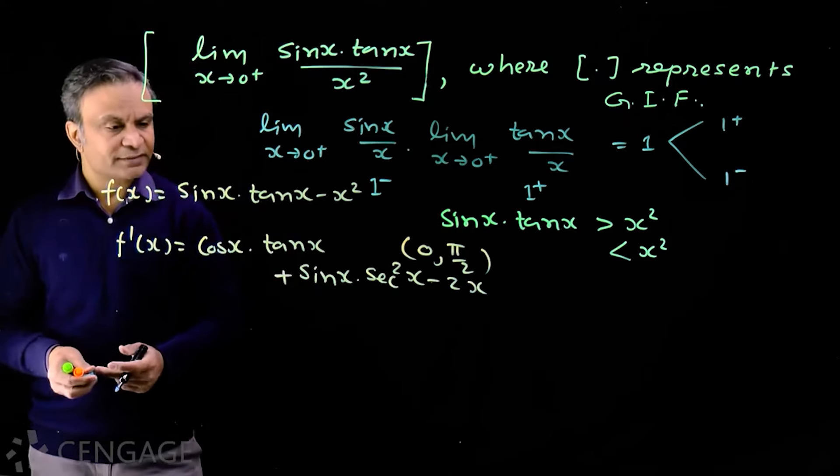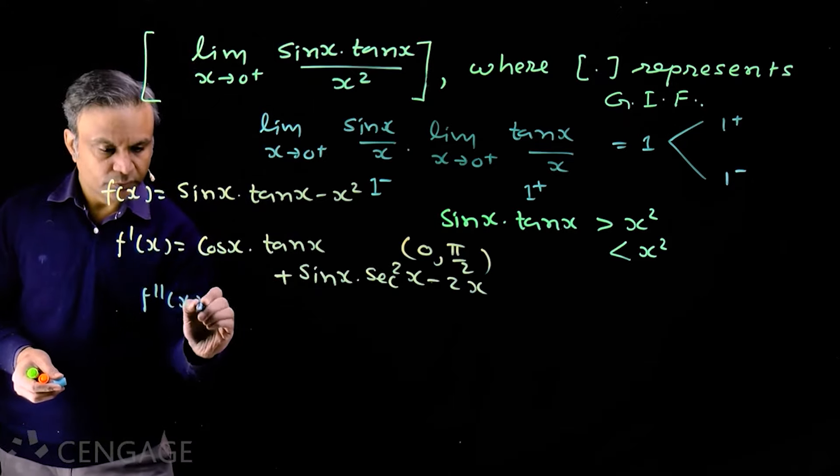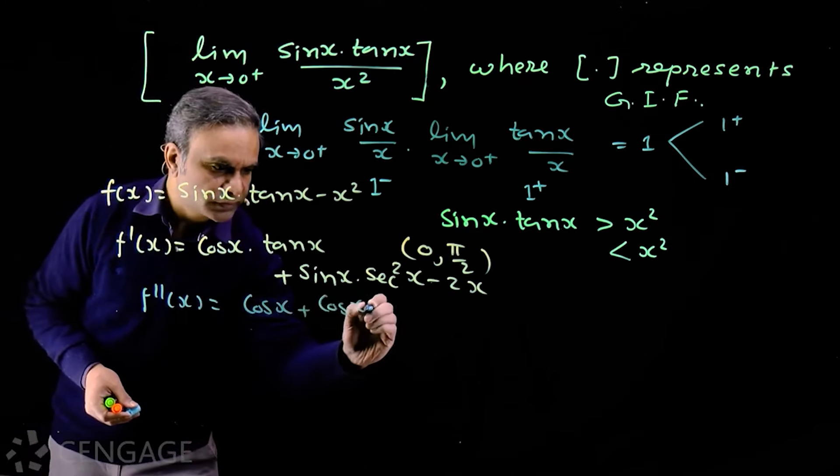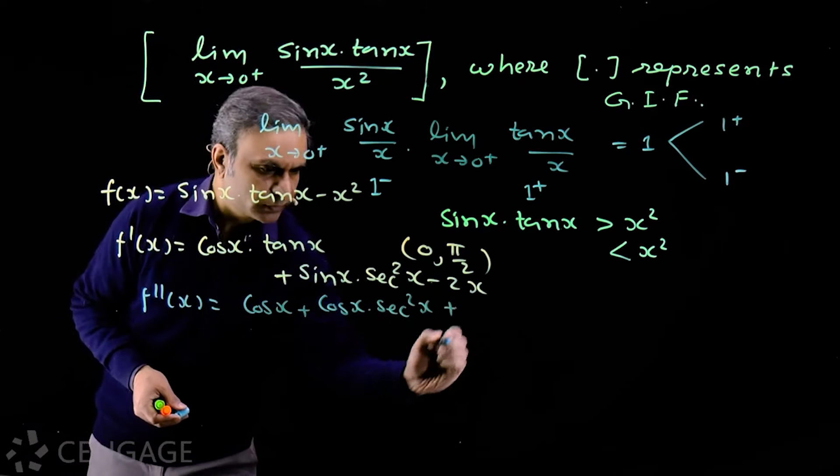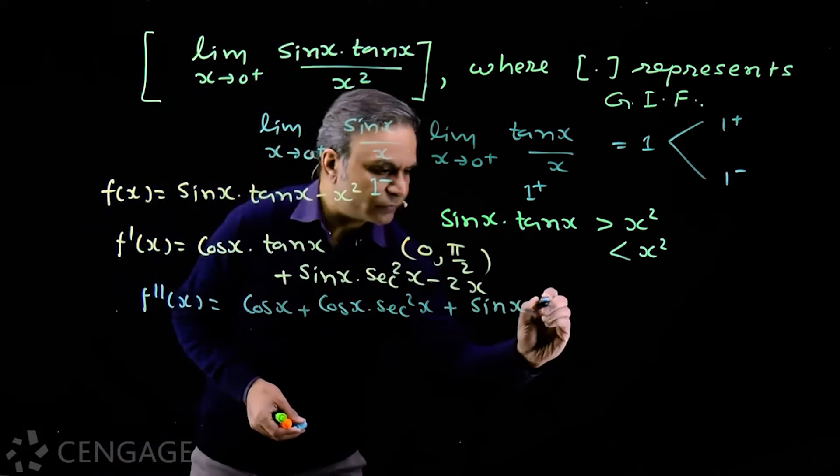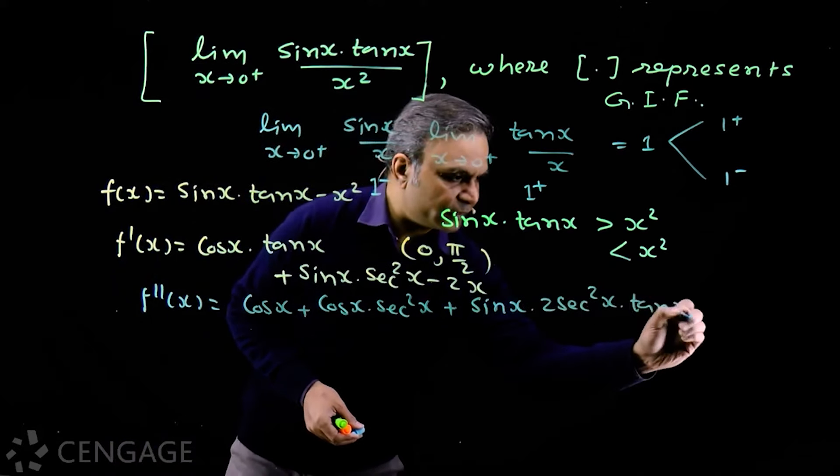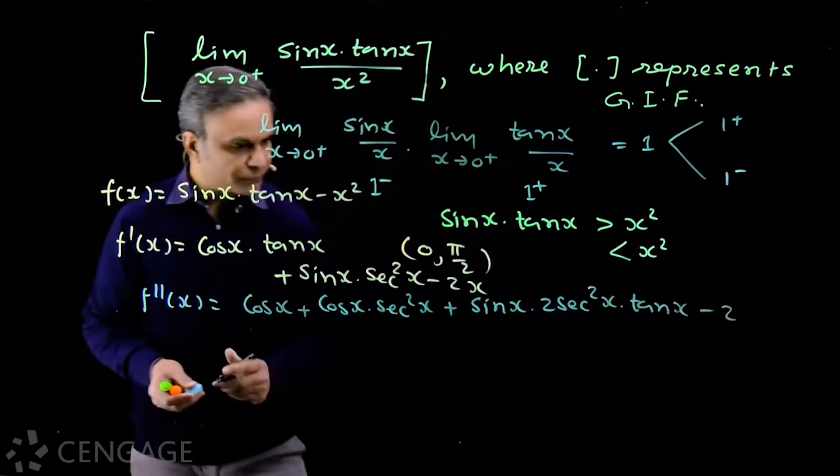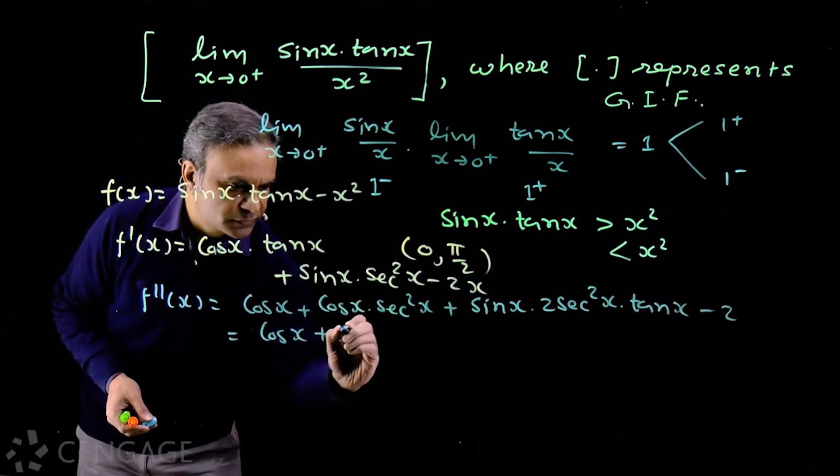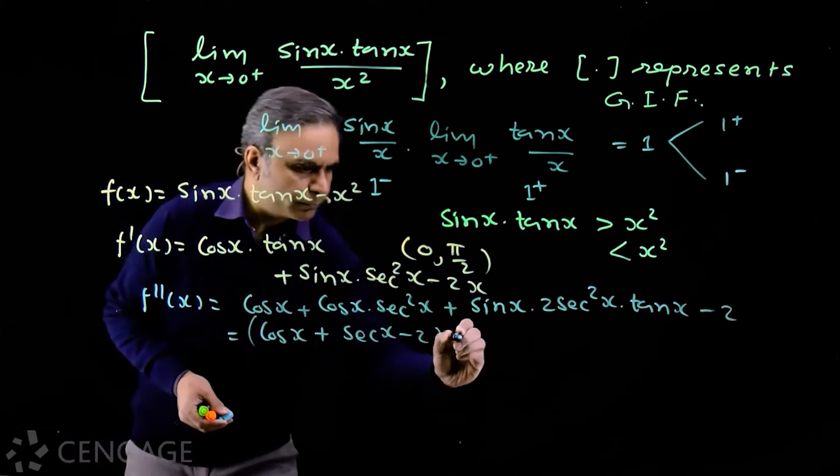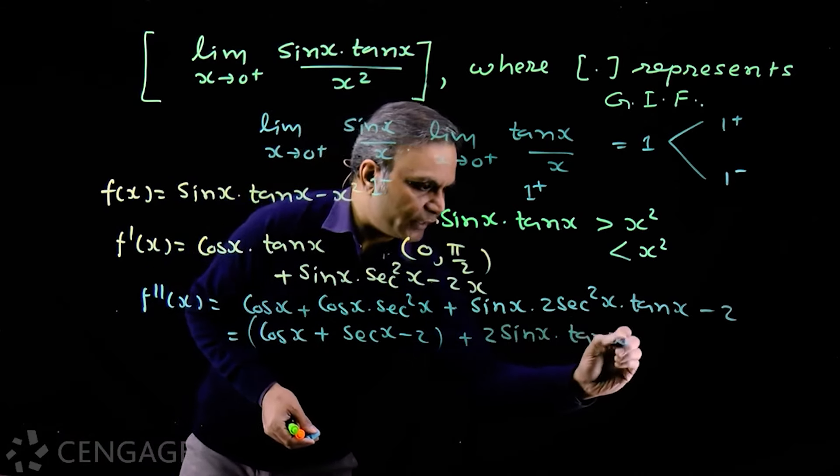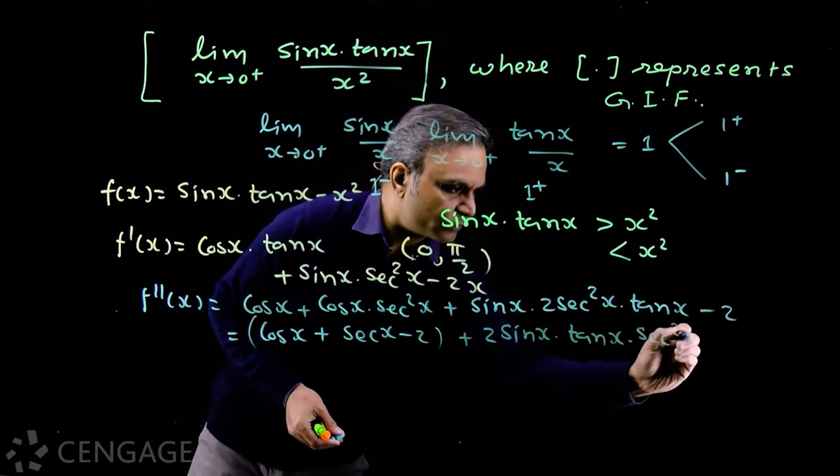Now cos x multiply by tan x is sin x. So double derivative of f(x) is cos x plus cos x sec squared x plus sin x multiply by derivative of sec squared x, which is 2 sec squared x multiply by tan x, minus 2. Let's simplify. We have here cos x plus this product is sec x minus 2, plus 2 sin x multiply by tan x multiply by sec squared x.